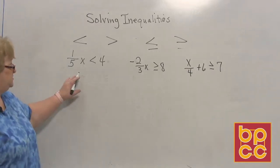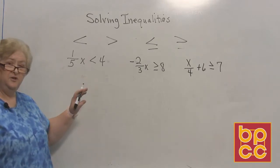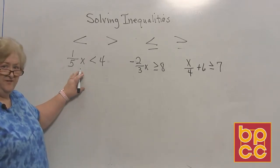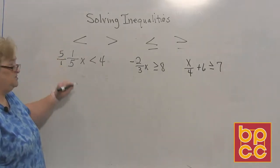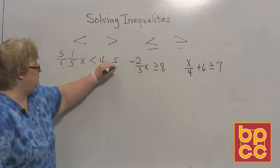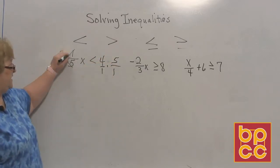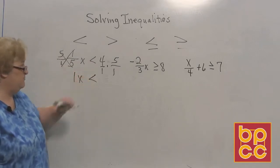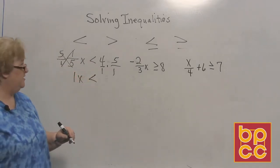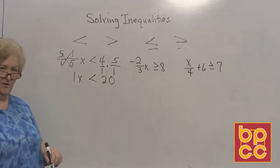So in this particular case, one-fifth x is less than 4. The reciprocal of one-fifth is 5 or 5 over 1. So I'm going to multiply both sides by 5 or 5 over 1, and this will clear out to 1 positive x. The sign remains the same because there's no negative variable, and 4 times 5 is 20. You remember that from equations?